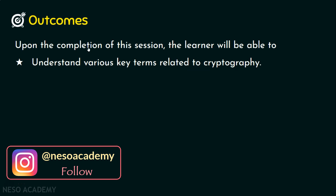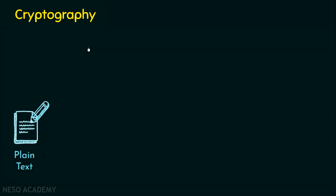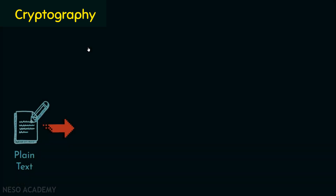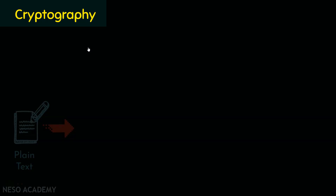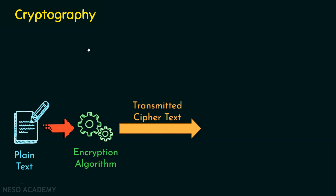Before stepping into various key terms, let's revisit what cryptography is. Cryptography is the art or science or method that converts plaintext into ciphertext and ciphertext back to plaintext. A plaintext is given as input to an encryption algorithm, which converts it into ciphertext. The ciphertext can be sent over the internet because no one can understand what encryption algorithm was used or what key was used to generate it.